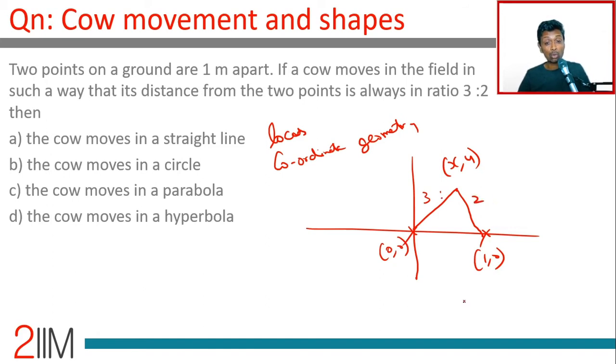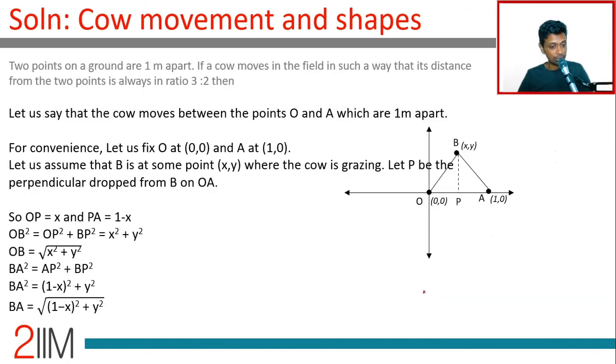Plug that in and think about what expression turns out for x comma y. This distance is root of x square plus y square. This distance is root of x minus 1 the whole square plus y square, or 1 minus x the whole square plus y square. Simplify that and we'll get an expression.